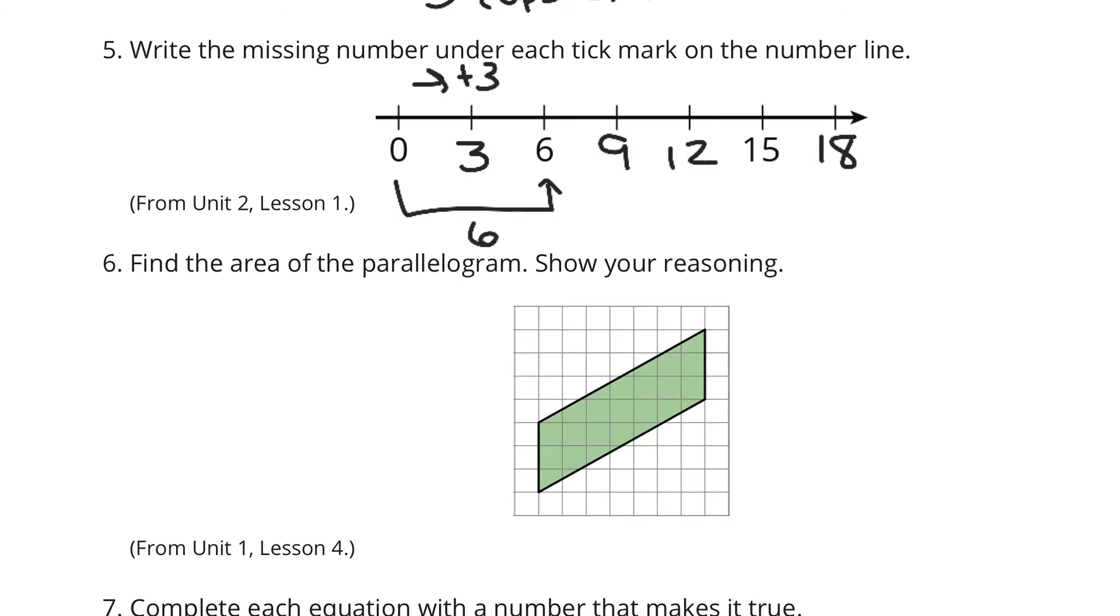And then find the area of the parallelogram. Show your reasoning. It's a blast from the past. Remember, your base here is three. If I go at a right angle, as I extend that base using that blue highlighter there, it needs to be at a right angle. And my height is one, two, three, four, five, six, seven. And the area of the parallelogram is equal to base times height. So three times seven is twenty-one square units.